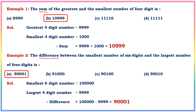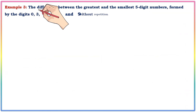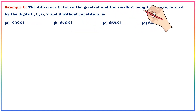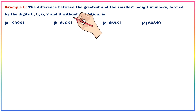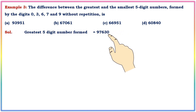Next: the difference between the greatest and the smallest five-digit number formed by the digits 0, 3, 6, 7, 9 without repetition. The smallest number formed is 30679, and the greatest number formed first — arranging digits in descending order.